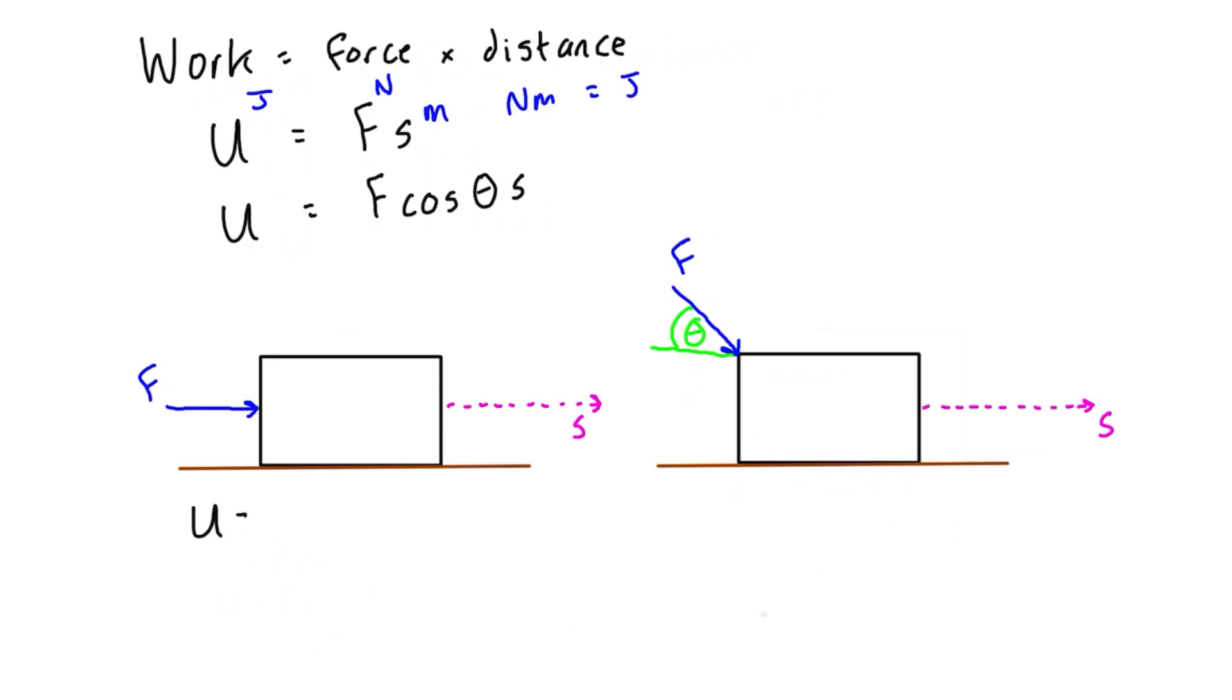If we write out the expression for these, we have work equals F cos theta S. In this case, theta is zero because there's no difference in angle between F and S, so we can write this as F times cos of zero times S.